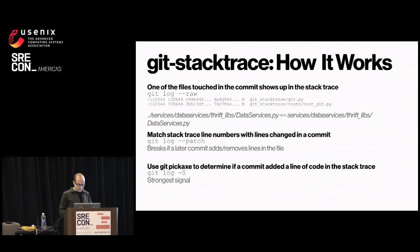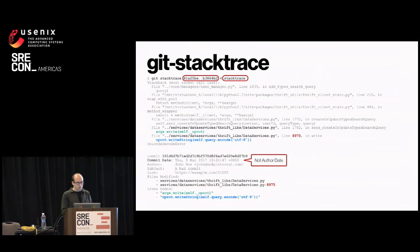Putting it all together: the input is a git range (say a1 to b3) and the stack trace passed in via standard in or a file. On the output, we have one result showing the commit, the commit date — importantly the commit date not the author date, since the commit date is when it got merged, which is what matters — the author, the subject line of the commit, and an internal code review link.